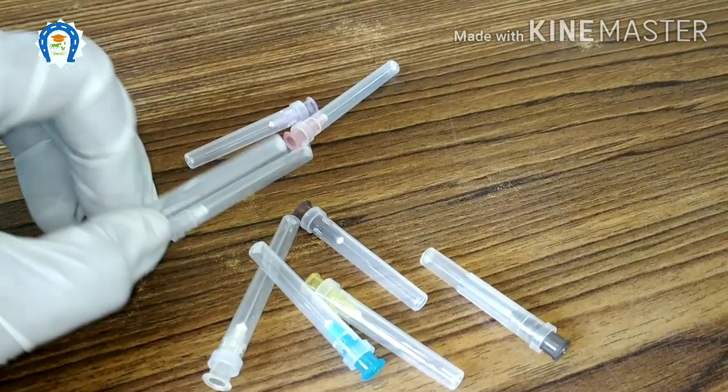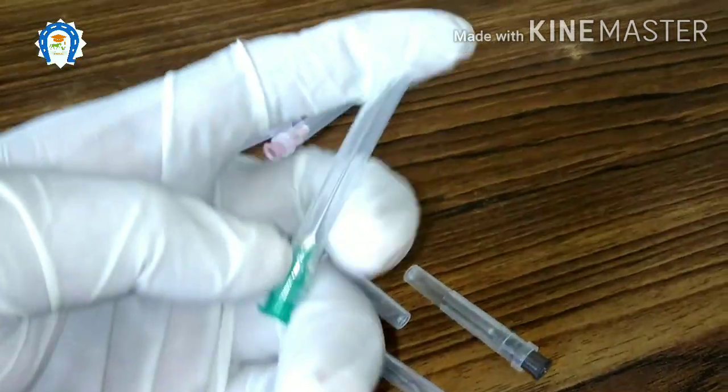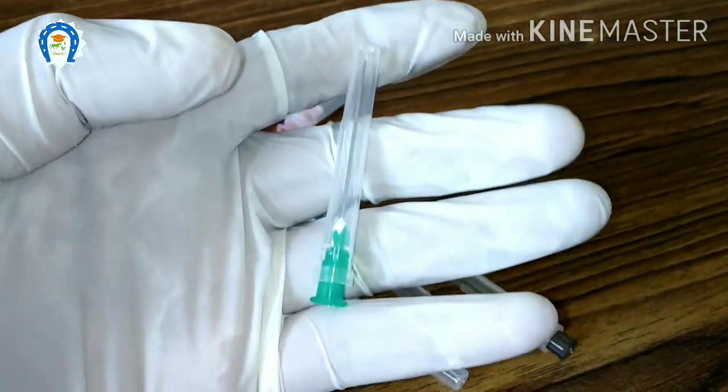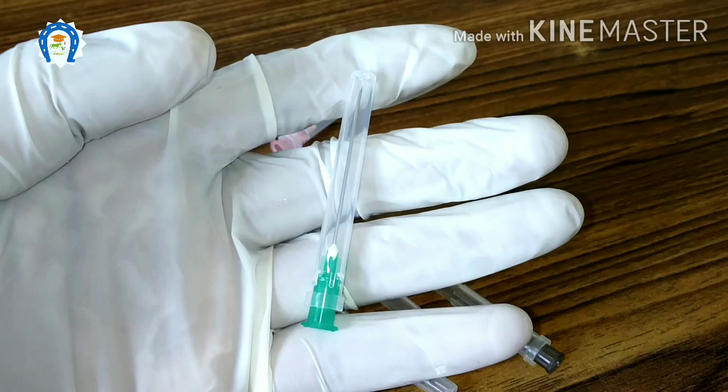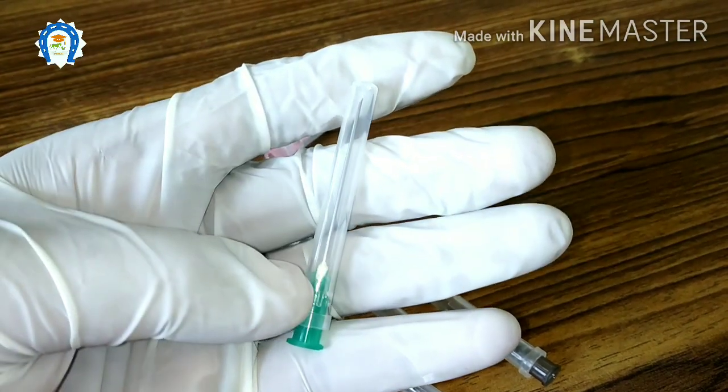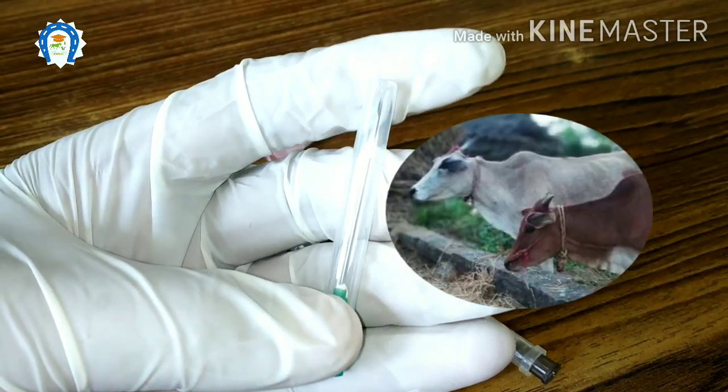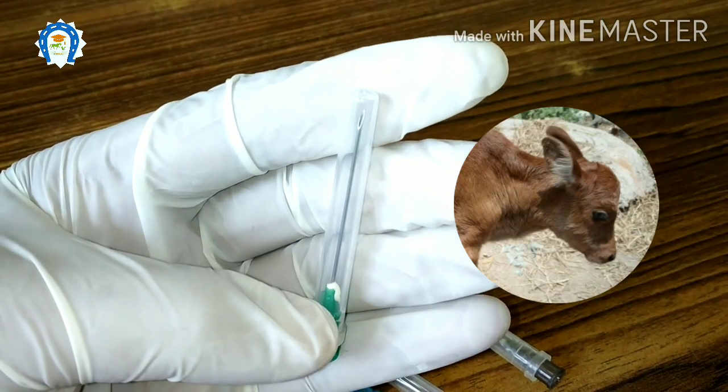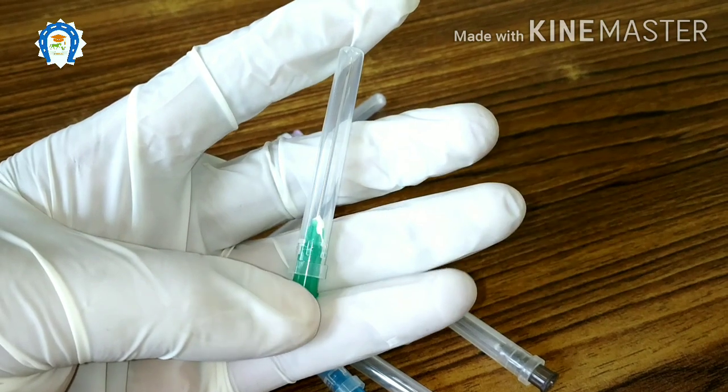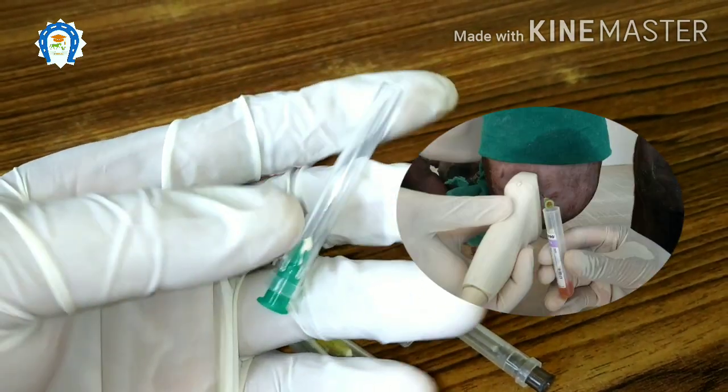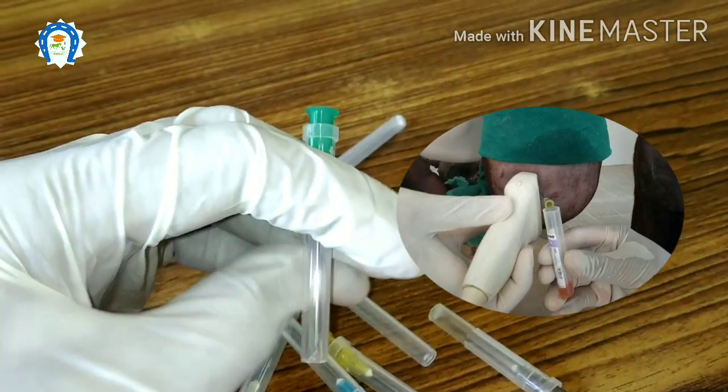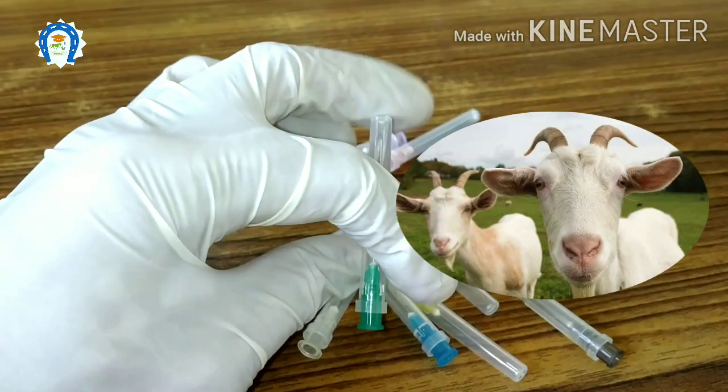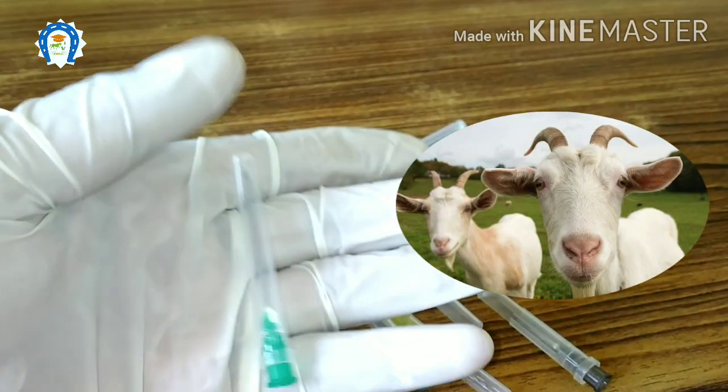Then the green color needle, that is the 21 gauge needle. This is very useful in large animal practice. We can use this needle for blood collection in horses, sheep, goats, and young cows, and we can use this for intravenous and intramuscular injections in cows, goats, and sheep. This is an ideal needle for intra-articular injections in horses and cattle. In sheep and goats, it is used for epidural injections.